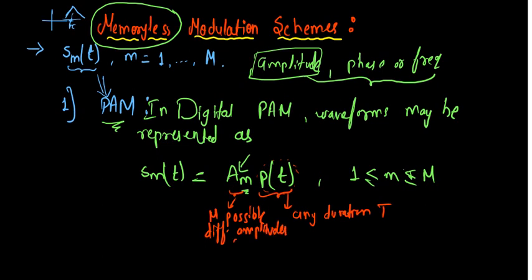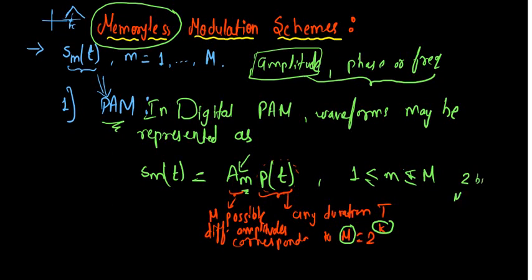A_m will be a set of M possible different amplitudes, corresponding to M = 2^K, where K is the number of bits per symbol. So M is the total number of symbols. For example, if we have 2 bits per symbol, M = 2² = 4, giving us 4 symbols: 00, 01, 10, 11. In general, each symbol is identified by K bits — a K-bit block.